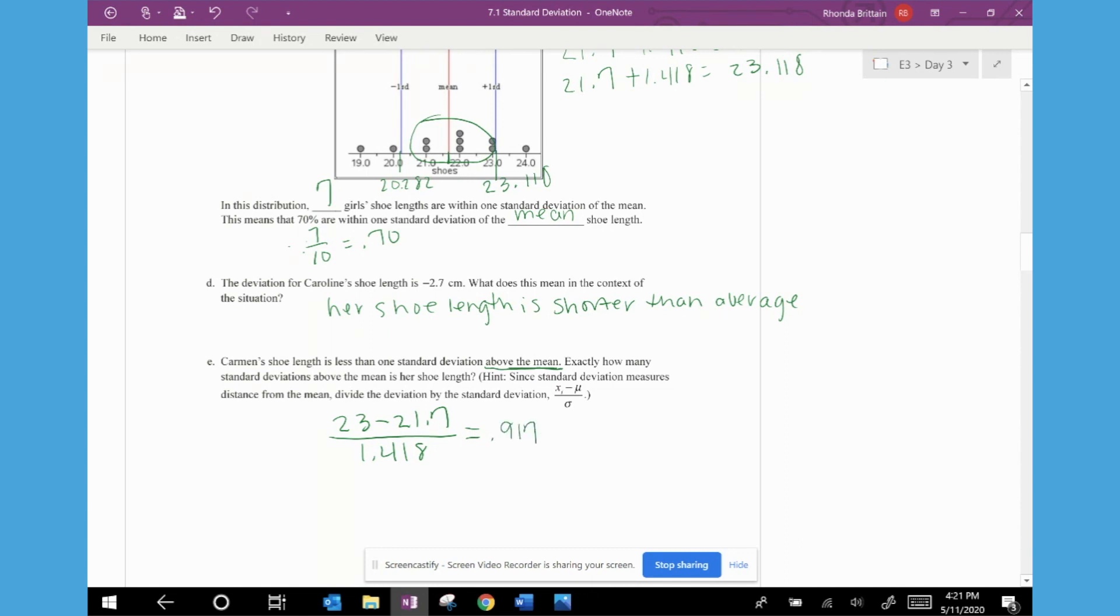So if we wanted to interpret in context, we would say that Carmen's shoe length is 0.917 standard deviations above the mean. This may sound like a familiar calculation. And this calculation is actually a z-score calculation. We're not required to teach z-score calculations in the scope of the course of study. But if you're familiar with the z-score, it is by definition the number of standard deviations that data value is above the mean.